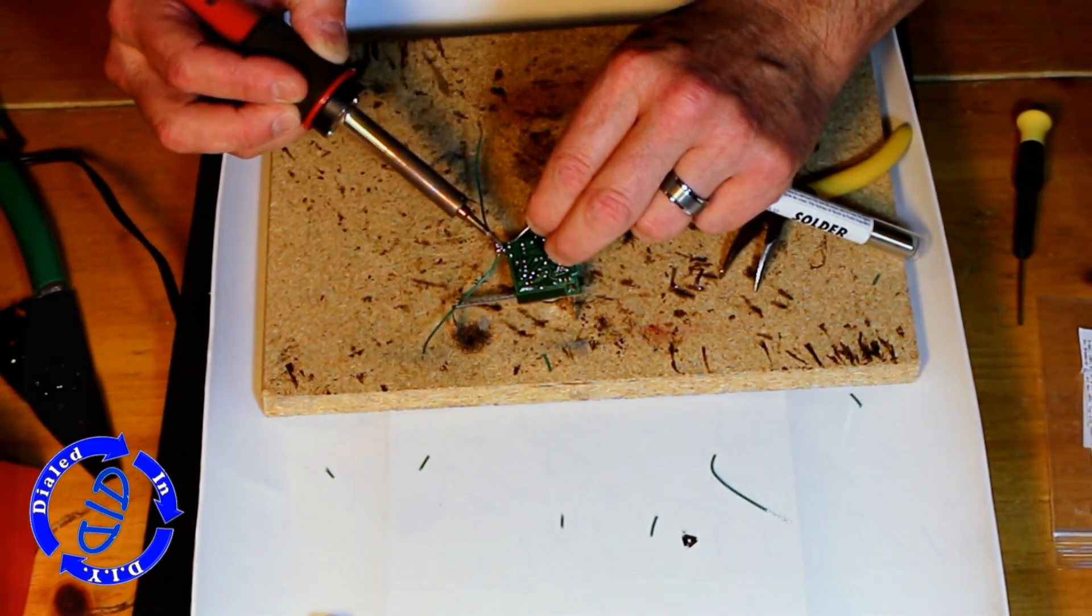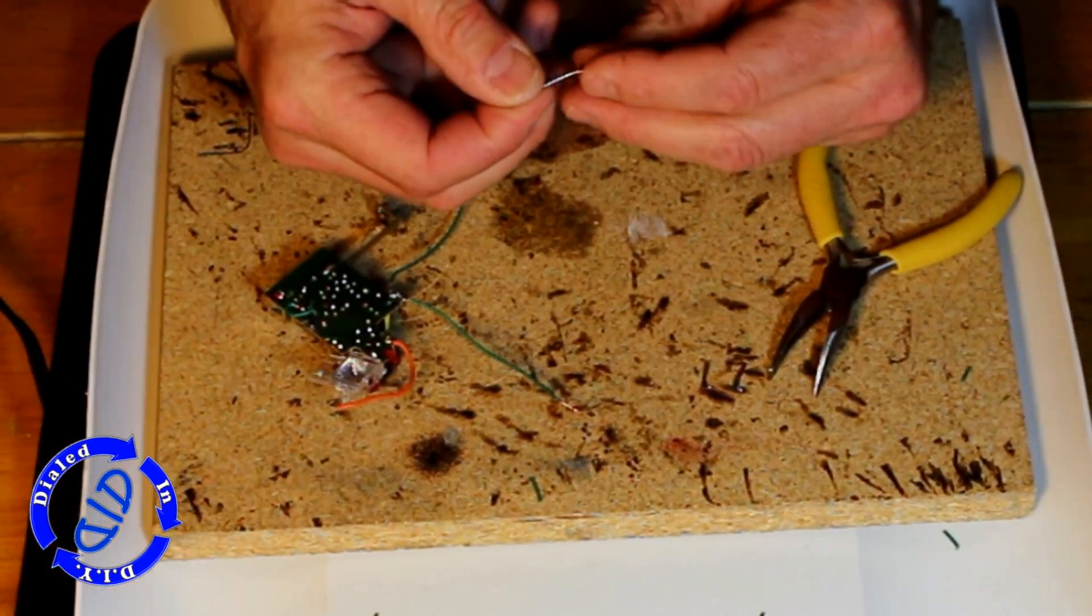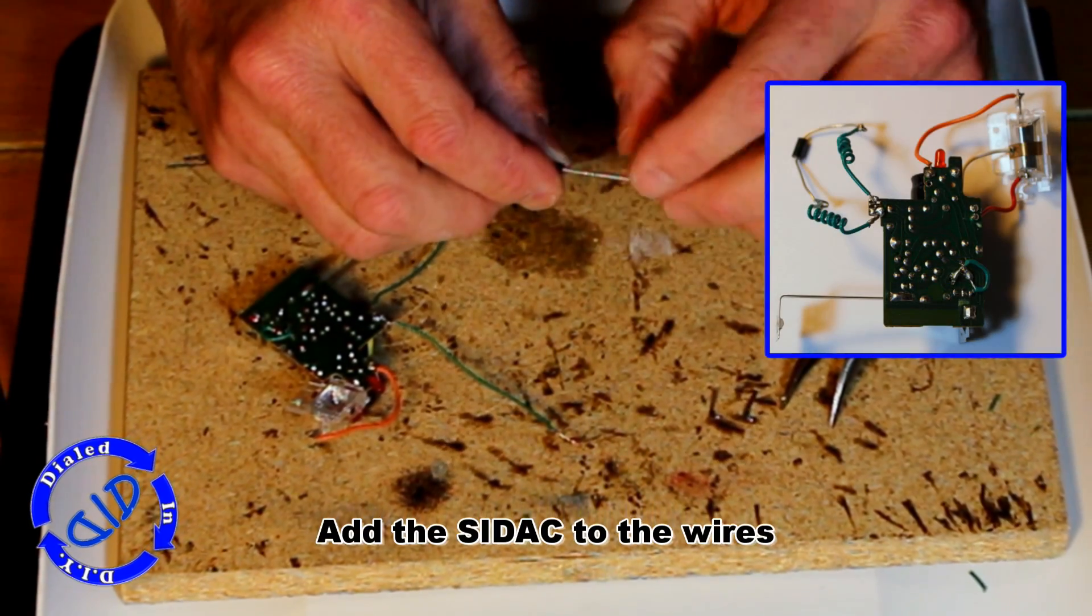We're going to add the Sideac to the two wires, and since it's bi-directional, it does not matter which way you put it in there. Just connect it to the wires and you're ready to go.